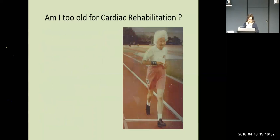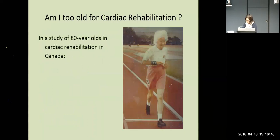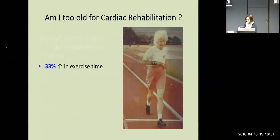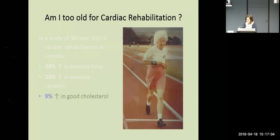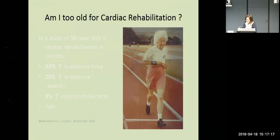Arrhythmias and people without developed coronary artery disease but with a history of risk factors who would benefit from addressing those are also included. Is there an age limit? Cardiac rehab is targeted at adults over 18, but basically there's no upper limit. In a study of 80-year-olds in Canada going through cardiac rehab, they had a 33% increase in exercise time, improved their exercise capacity by 20%, improved their good cholesterol levels, and it was found to be safe in terms of adverse events or deaths.